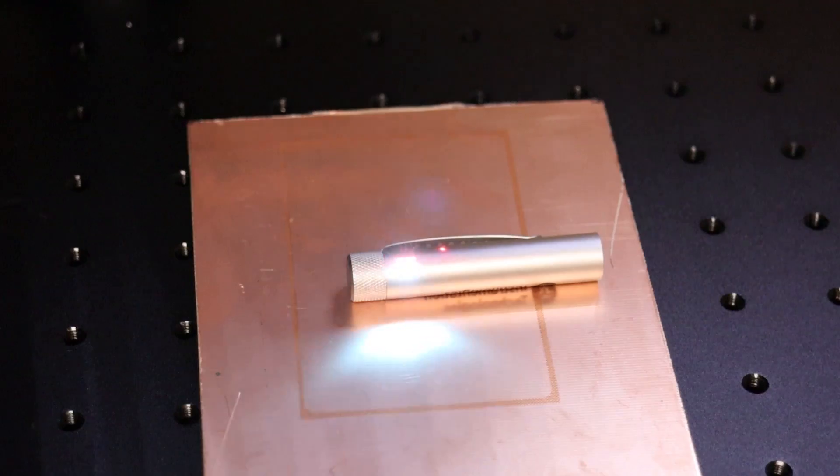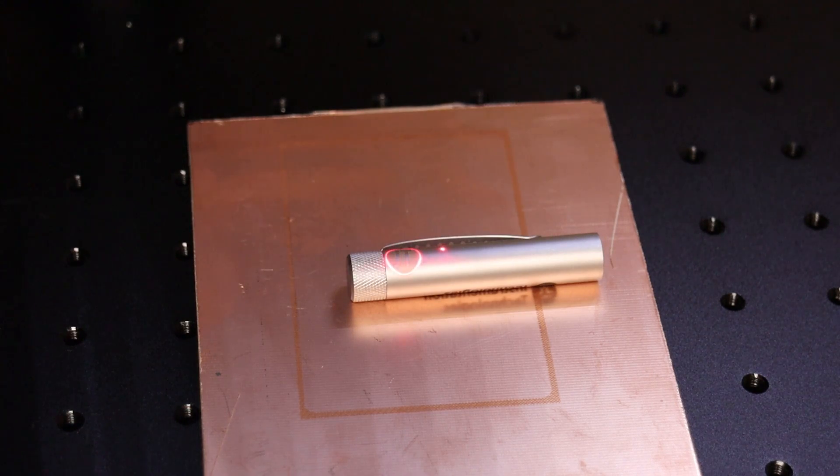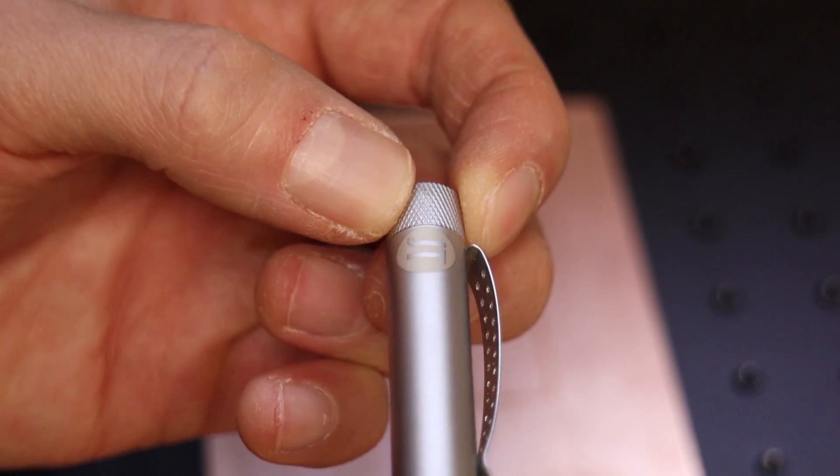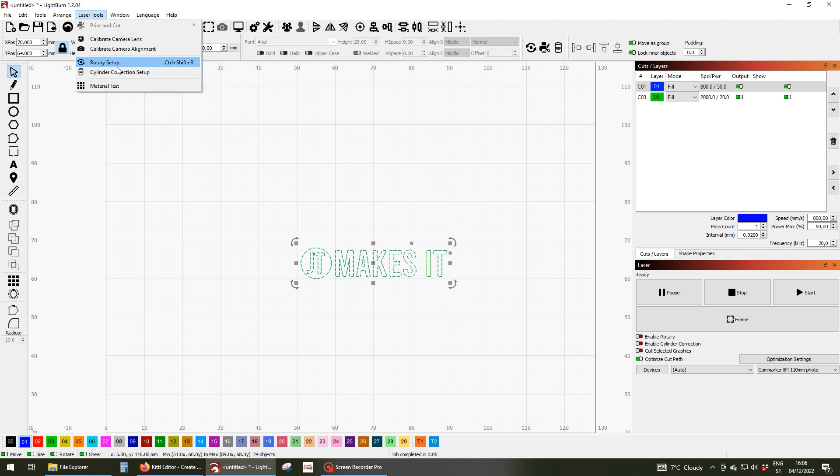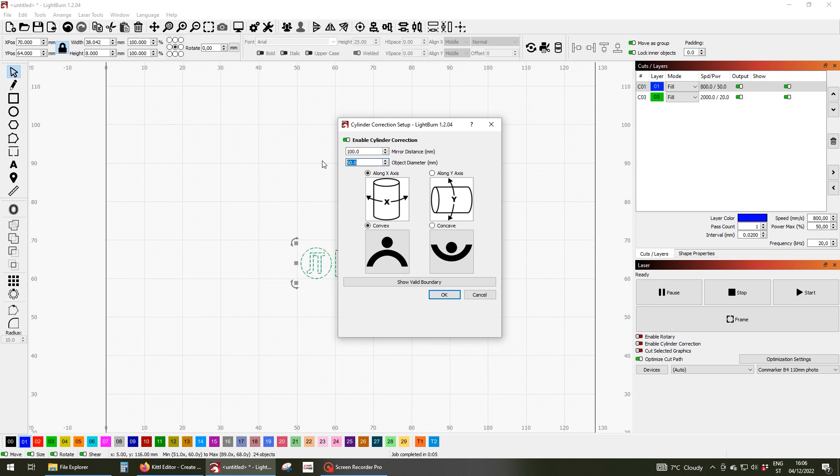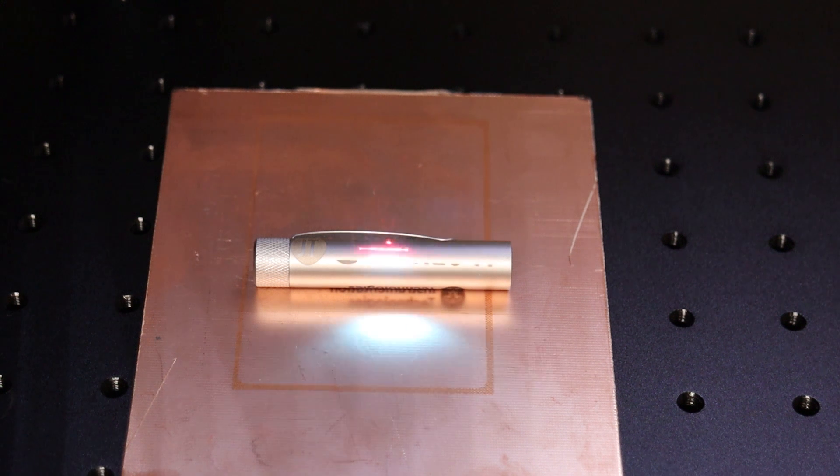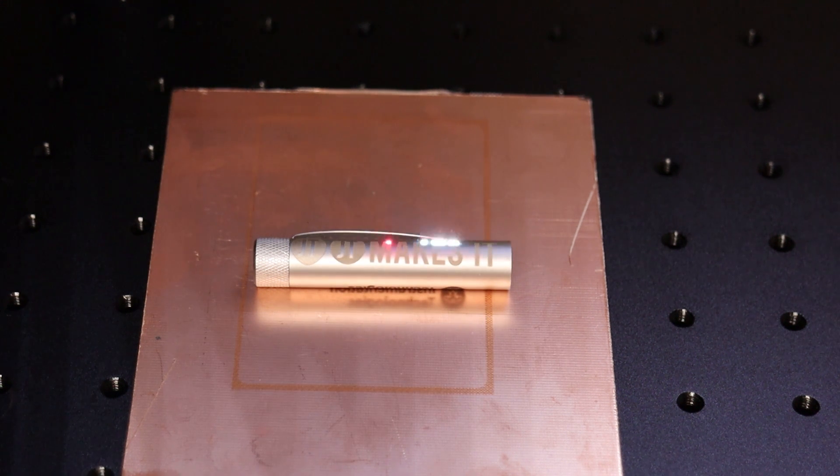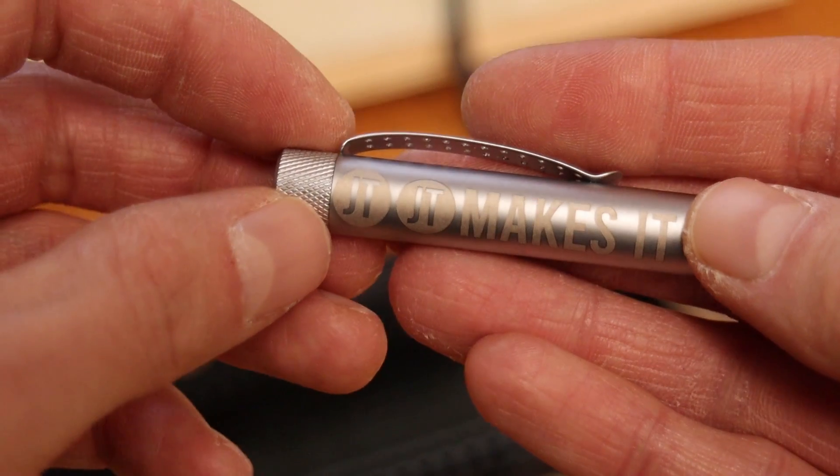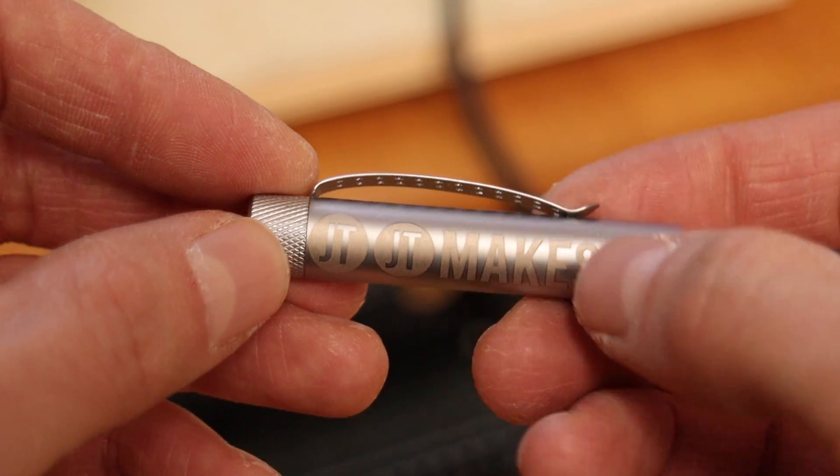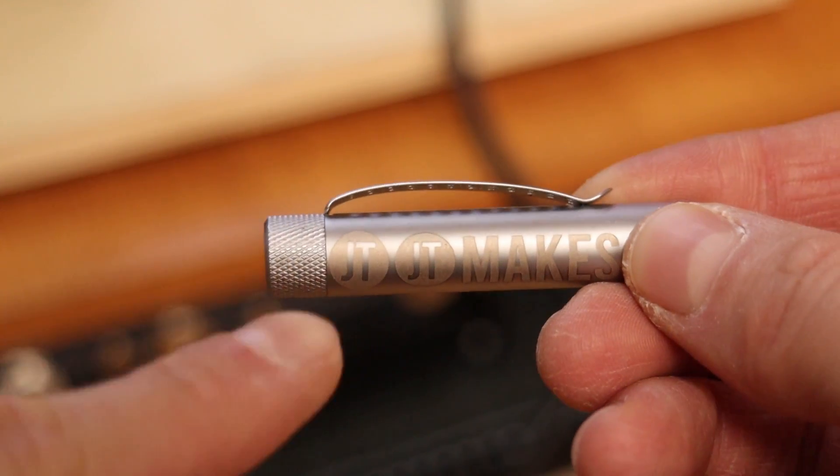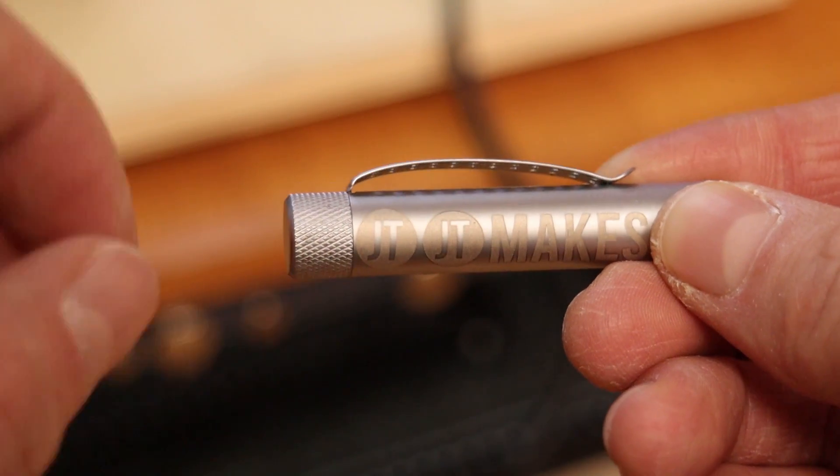When engraving cylinders, your design will always get distorted. You can get around this with cylinder correction in Lightburn or EasyCAD. In the preview you can see how it corrects the geometry to take into account the roundness of the surface. The result is perfect. The difference is obvious if compared to the non-corrected logo.